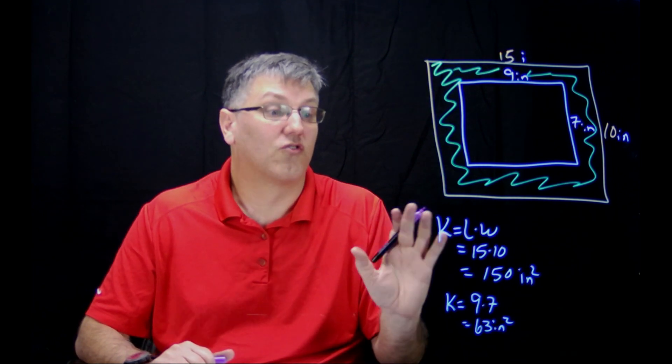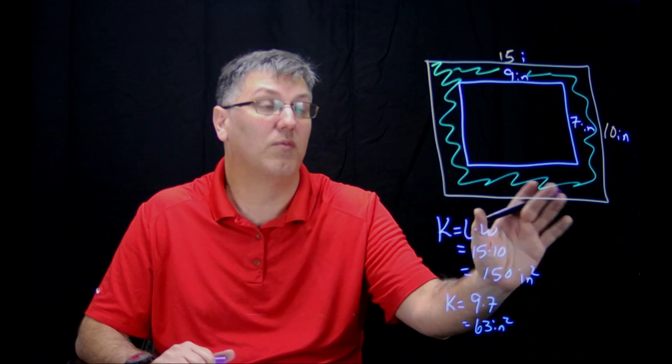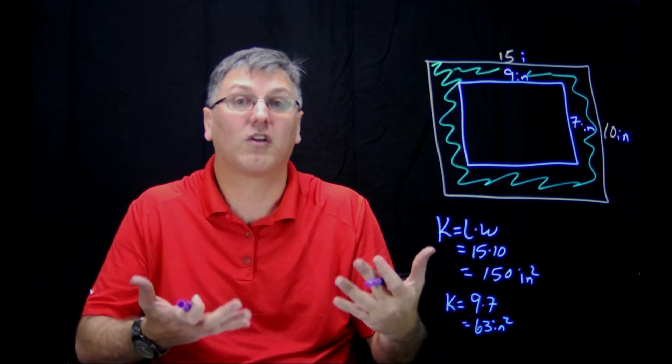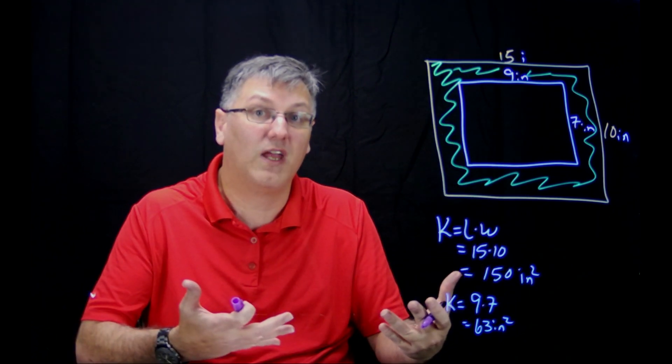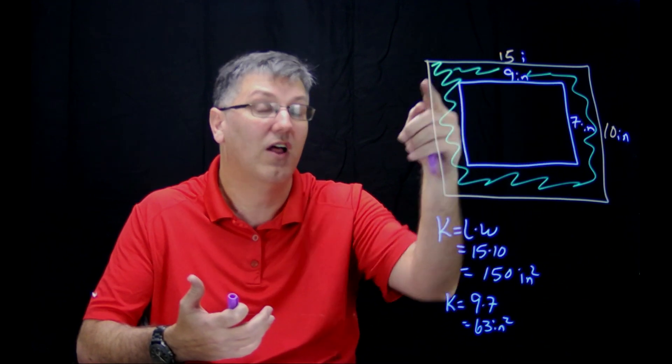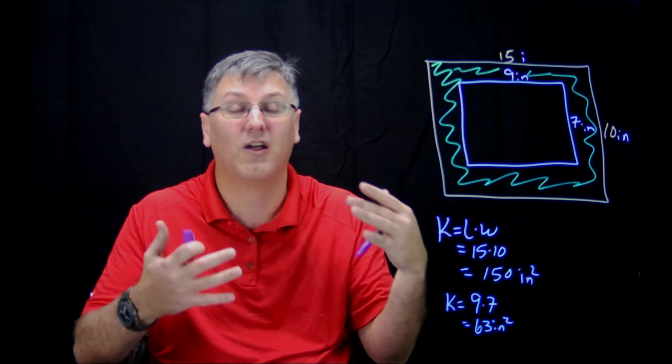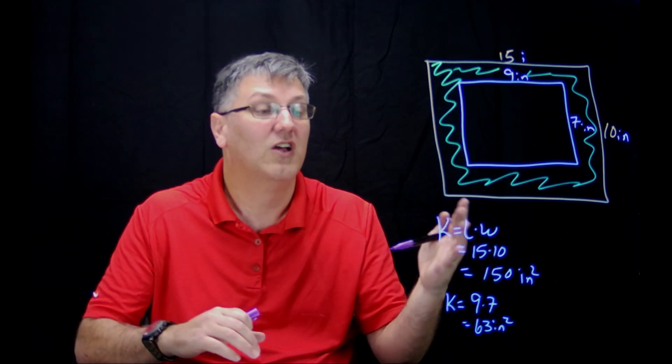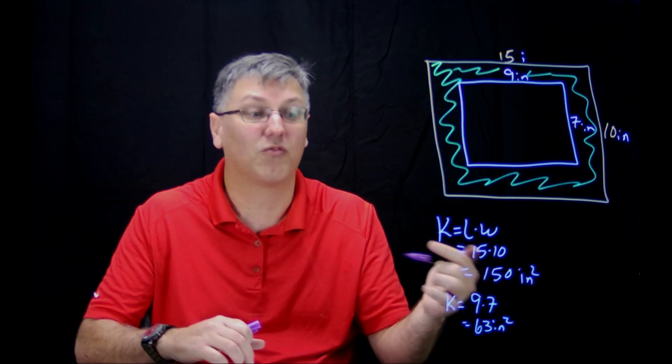All right, so far so good. I know the area of the big one, I know the area of the small one. Now, this is a composite figure, so if I actually want to find the area of this outside region, I don't need to go crazy by cutting it up and trying to do all these crazy things. Just take your larger area minus your smaller area.